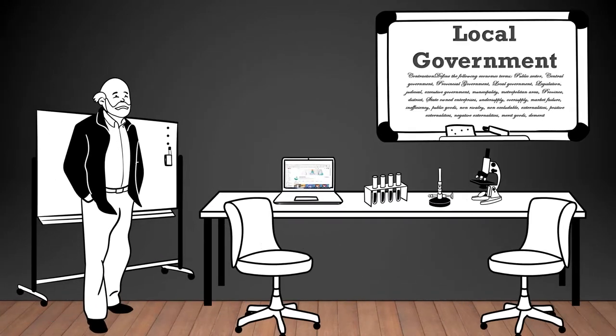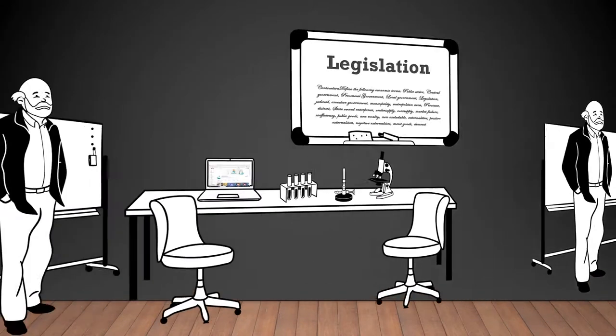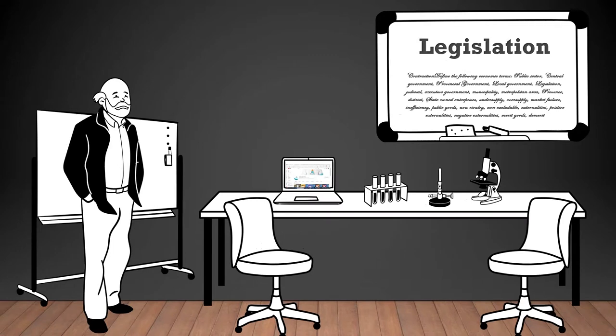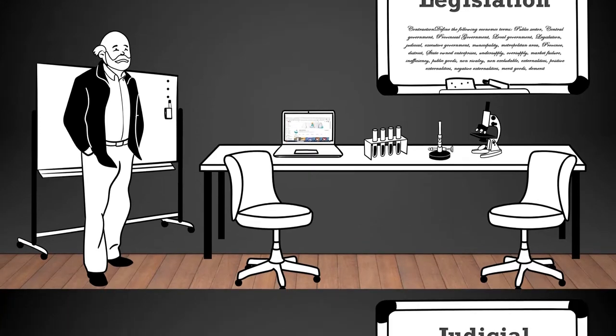Local government: the level of government that governs and provides services at the community or municipal level, serving cities, towns, and villages. Legislation: laws or statutes created by a legislative body, example parliament or congress, to govern various aspects of society and the economy.